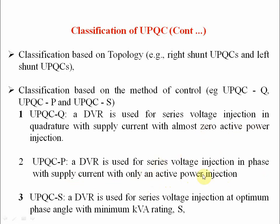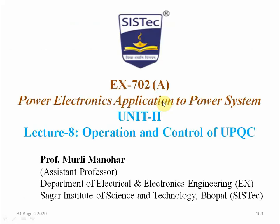In UPQC-Q we have zero active power injection, and in UPQC-P we have only active power injection. And UPQC-S: the DVR is used for series voltage injection at an optimum phase angle with minimum kVA rating. These are the three types of UPQC on the basis of method of control.